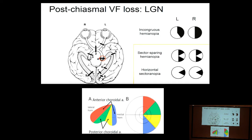Patients with an anterior choroidal stroke don't have aphasia or the other features you'd expect with an MCA stroke. Posterior choroidal artery strokes are very rare, but if that happened, you'd have just a small central loss of vision.